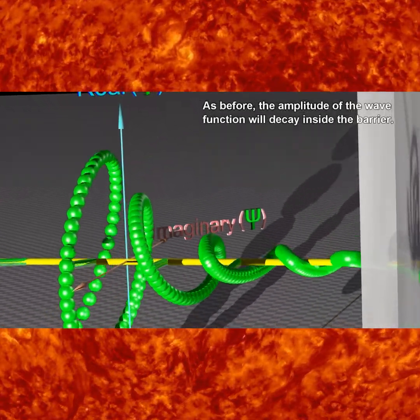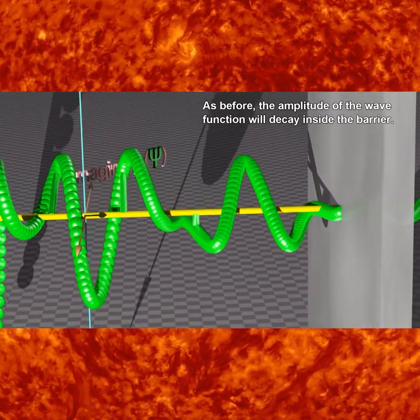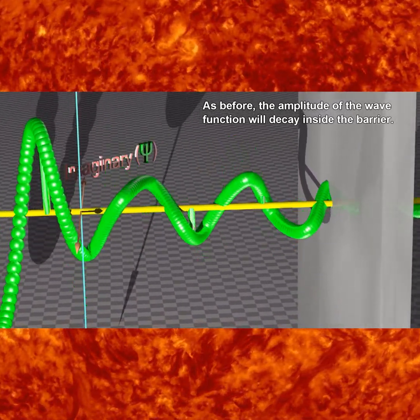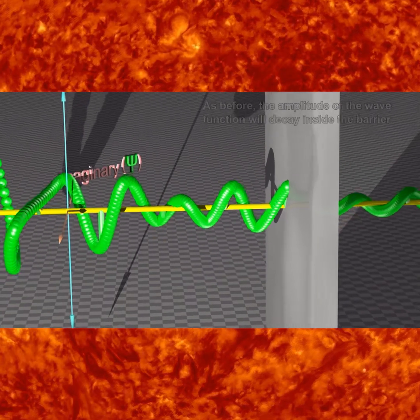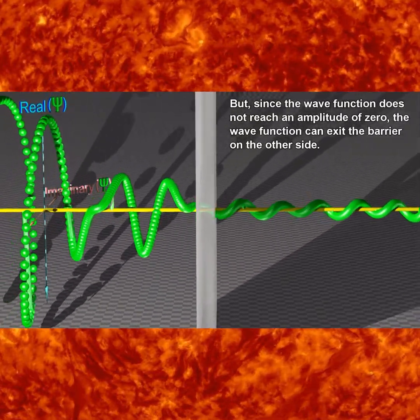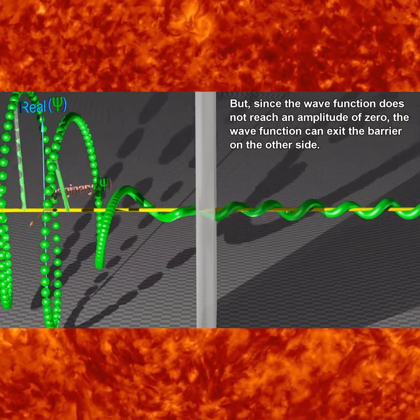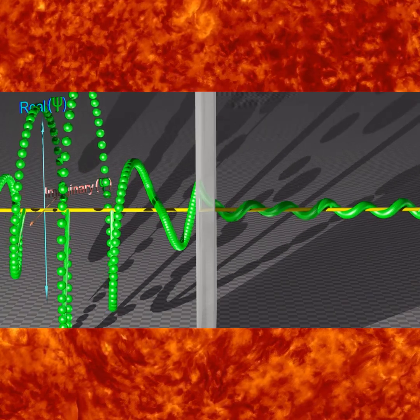Moving on to a couple of quick fundamental ideas in quantum: first is quantum tunneling. Quantum tunneling is the concept that when a particle is traveling with speed and collides with a barrier, there's a chance it will go through — basically teleport through, or penetrate. On a macroscopic scale, think of throwing a tennis ball at a wall: there's a chance it will travel through.